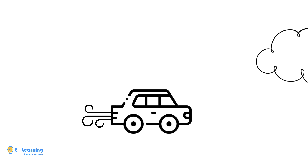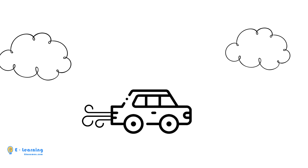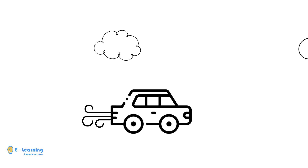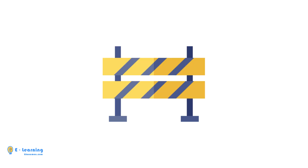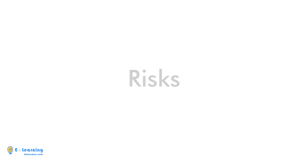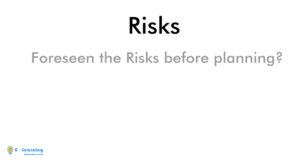After planning all these factors, you start the car and the trip begins. Suddenly, a sign pops up on the road showing that the road is blocked — it's because of heavy snowing. In project management, we call these blocks risks. Have you foreseen these risks before planning?